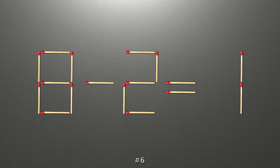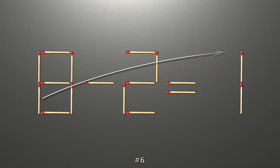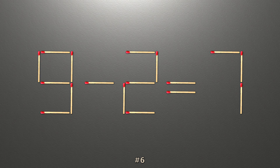To do this, all we need to do is move this match right here. Now when we check the condition, 9 minus 2 is 7, and 7 equals 7. Now our equality is correct.